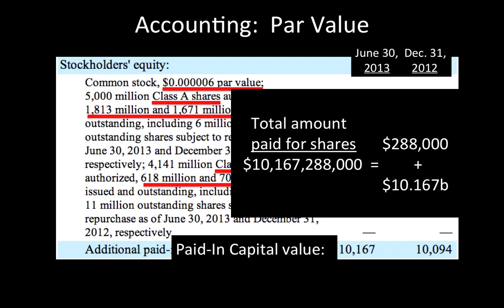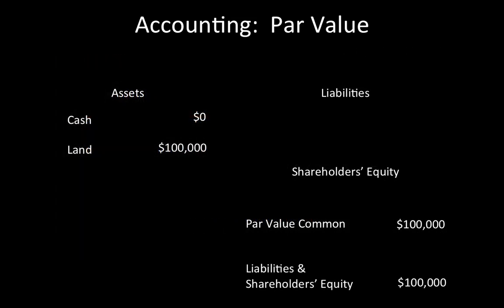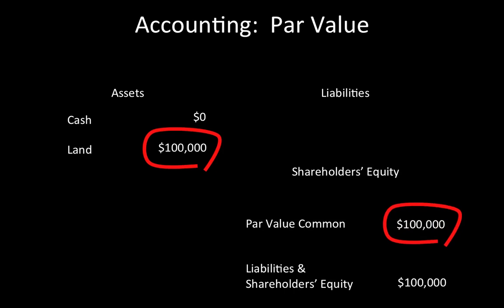To understand why, it is necessary to review a bit of legal history. In the 19th century, par value referred to the actual value of assets contributed to a corporation in return for common stock. For example, if a shareholder contributed land worth $100,000 to the business, the par value of the stock issued would be $100,000. Creditors reviewing the company's financial statements would see that the company had a $100,000 asset, and might be comfortable loaning the business $75,000 because it appeared to have far more than $75,000 in assets to cover the loan. This liability is shown on the balance sheet as bonds payable.